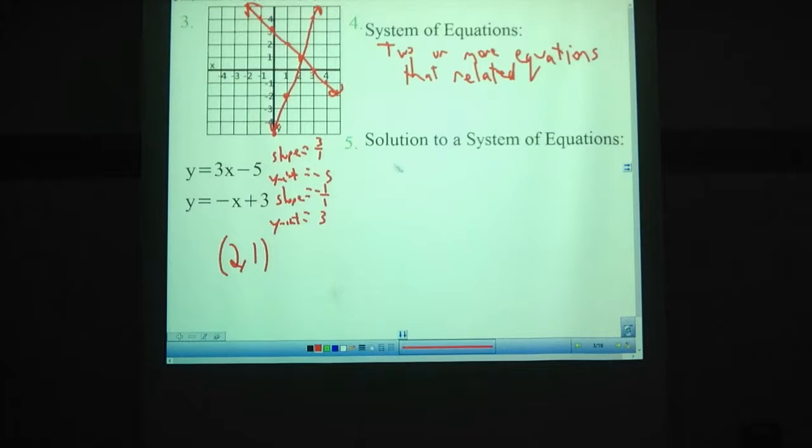Solution to a system of equations. On a graph, that is the point or points where the equations intersect. So here, that's that 2 comma 1.